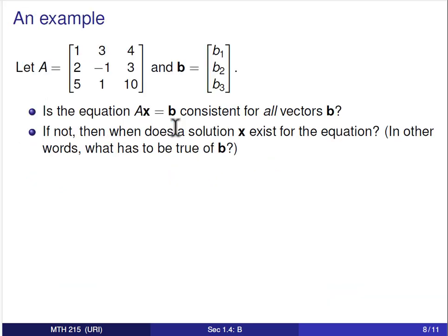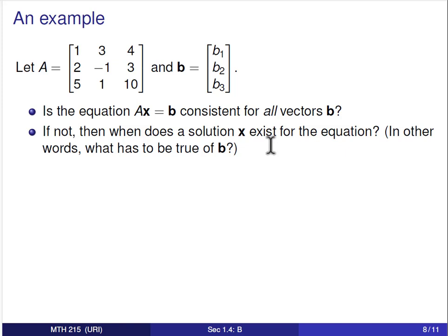Let's look at a specific example. Say we have matrix A and we let b be a generic vector with entries b1, b2, b3. We want to know: is the equation Ax equals b consistent for all vectors b? Will there be a solution no matter what b1, b2, and b3 are? If not, what must be true about vector b to guarantee that a solution exists?